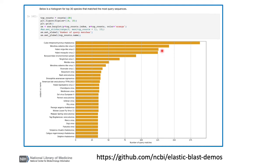With a notebook, it's easy to change the workflow. A collaborator could modify what you've done to try out new ideas. They could even try out a new database or query set. Their BLAST searches can still run on the cloud. By the way, this search cost me about 10 cents to run on my personal AWS account.